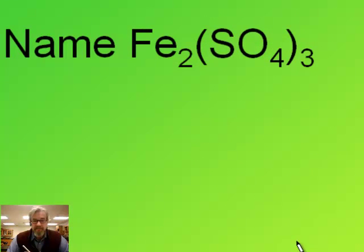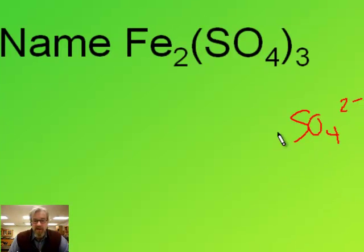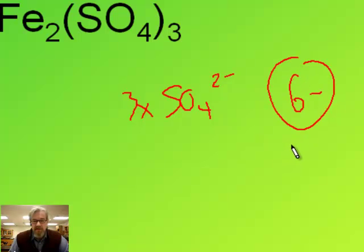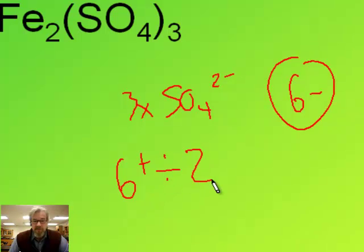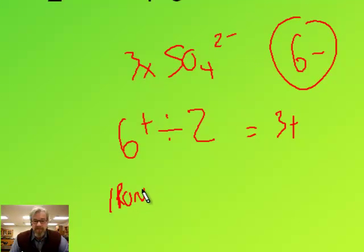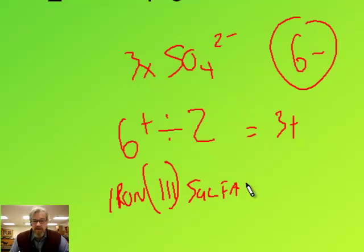Name Fe2(SO4)3. Sulfate is SO4 two minus, and we've got three of them, so that gives a total of six minus in this compound. There has to be six plus to balance that, and there are two irons to divide that among, so each iron has a three plus charge. So when I write the name, I write iron three, because it's a three plus ion, and then the anion name: sulfate.